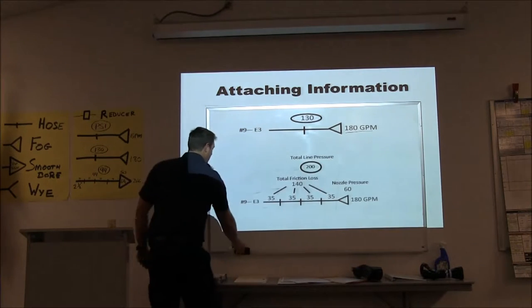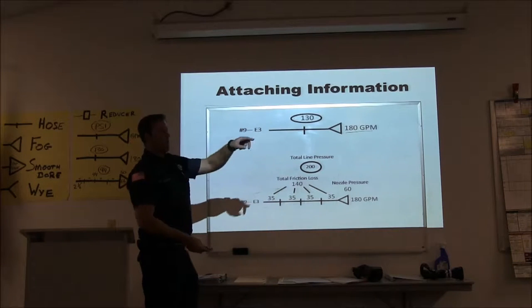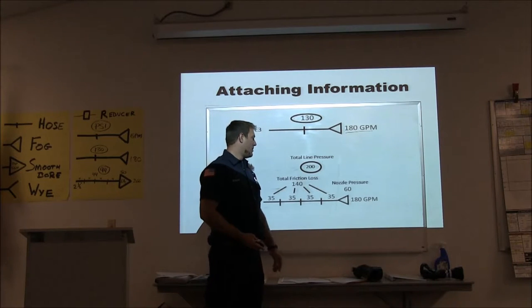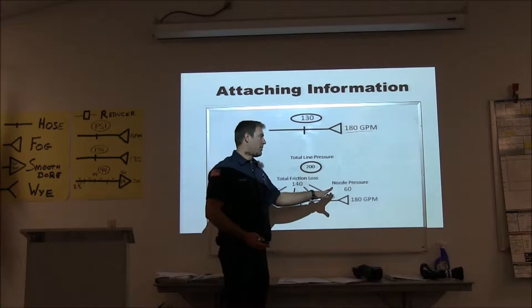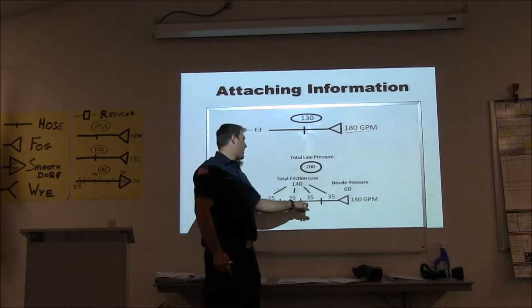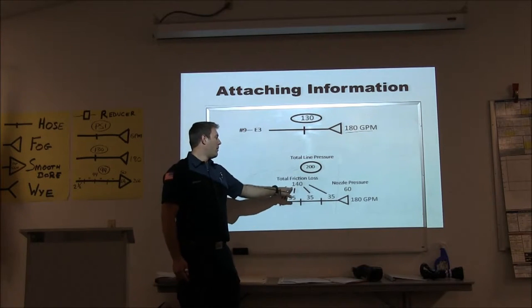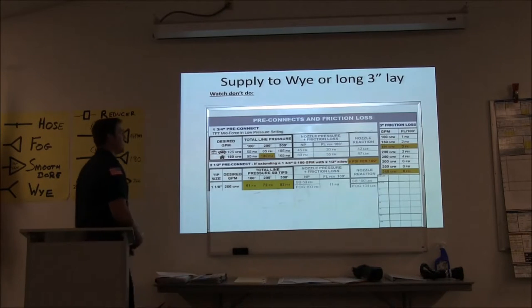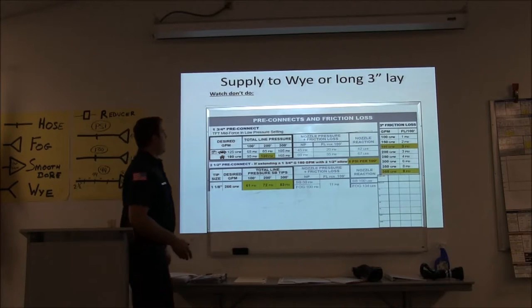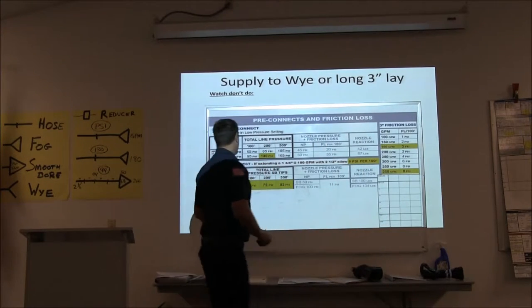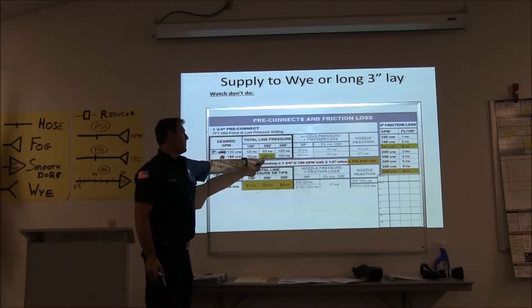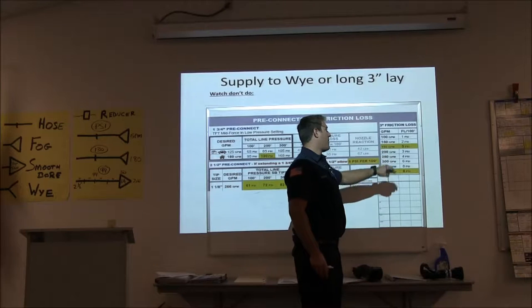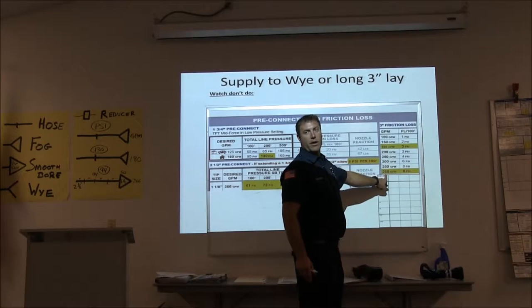Our chart only goes to 300 feet on an inch-and-three-quarter pre-connect. So if I've got a 400-foot pre-connect, I do the math manually — 60 pounds at the nozzle, 35 PSI per section for a total of 140 in friction loss, plus 60 at the nozzle, and I circle my total discharge pressure. For a supply to a Y, I get my number from the inch-and-three-quarter pre-connect from one end, and three-inch friction loss from the other. The two most common flows — 180 and 360 — are already highlighted.